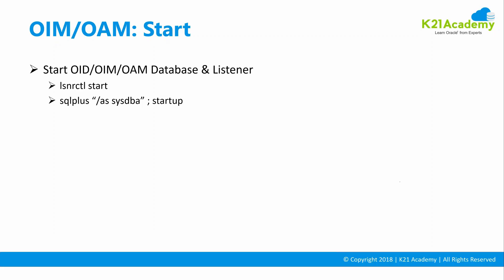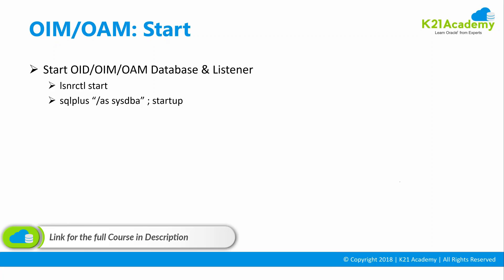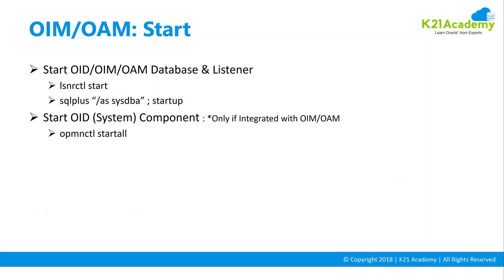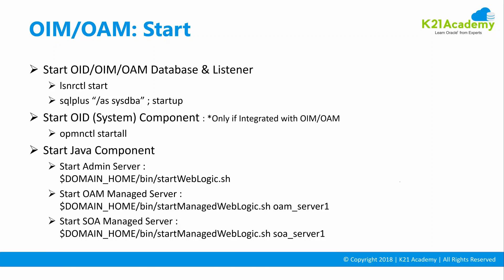To start, first make sure your database listener and database are up and running. Start the listener using 'lsnrctl start' followed by the listener name. Set environment variables for Oracle Home and Oracle SID. An environment file is already created in your activity guide — just run it, start the listener, connect to the database, start the database, then start OID using 'opmctl start all', and then start the Java components.